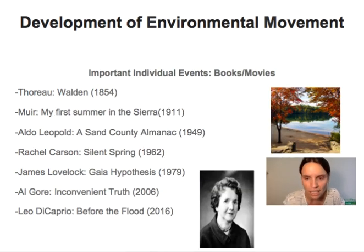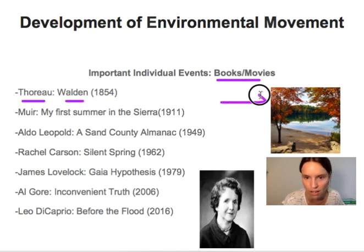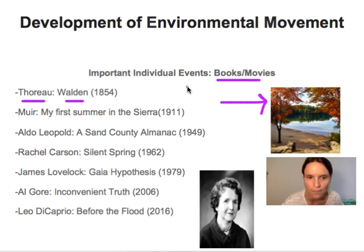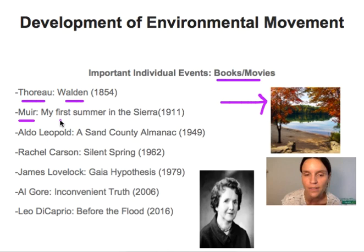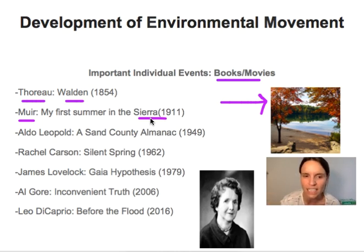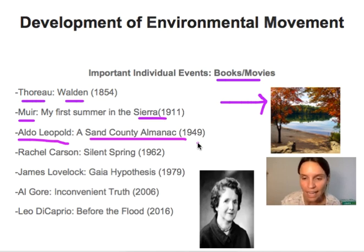Some of the smaller things that have influenced the environmental movement over time include books and movies. This started in the 1800s with Thoreau writing Walden — here is a picture of Walden Pond — and the idea that it's significant for people to go out into nature and live intentionally. John Muir quickly followed as a really important nature writer in the early 1900s, famous for conservation in the Sierras in California, doing a lot of hiking and naturalist thinking and writing. Aldo Leopold's A Sand County Almanac in the 50s is a beautiful book about trying to live off the land. These were all inspired by the beauty of nature.